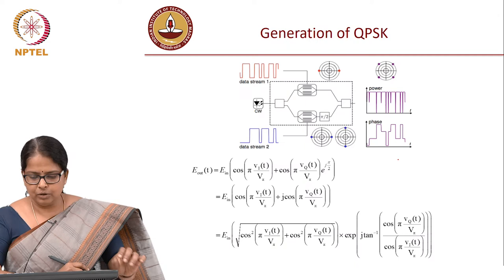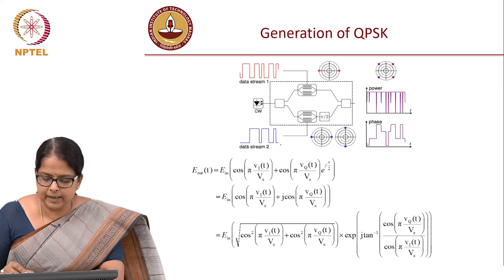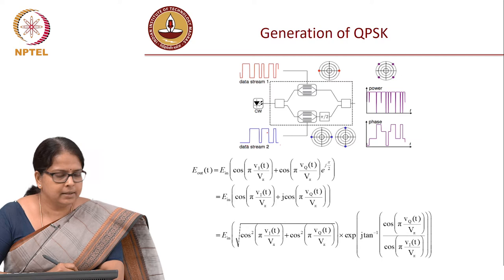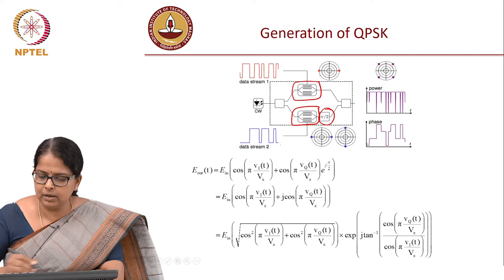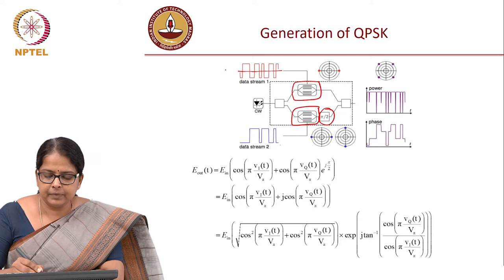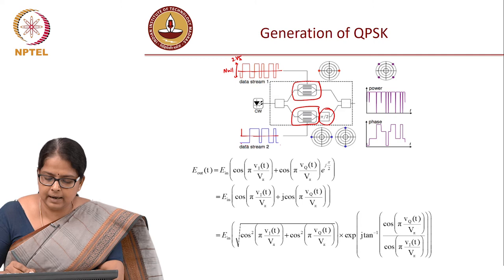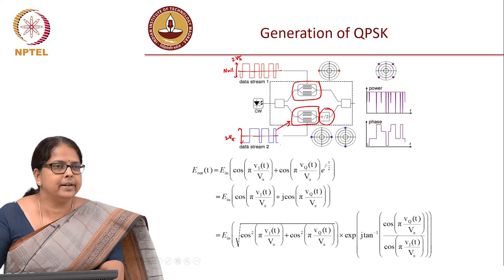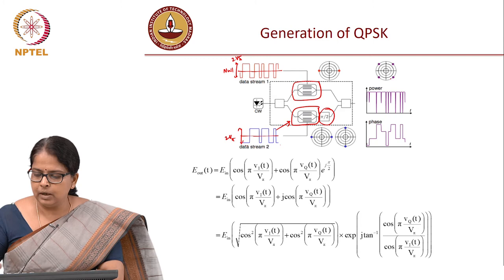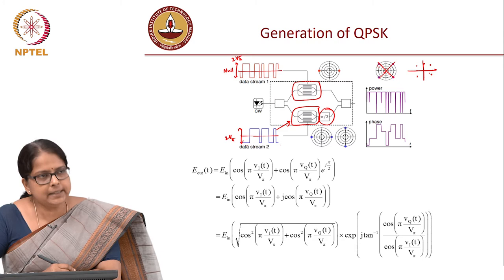You also need to apply a DC voltage which will rotate the phase by pi by 2. So you have data stream 1 and data stream 2 sent through your IQ modulator. You have two child intensity modulators and one phase modulator. Both child modulators should be biased at the null and the swing should be 2 V_pi. If you make everything identical, both V_pi values will be the same. Then you apply a phase shift of pi by 2 to get your QPSK modulation.